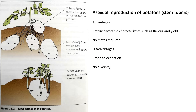The advantages of asexual reproduction in wild species is that you retain the favorable characteristics — the most obvious features will be shown. It doesn't require any mates, everything is done by a single parent, and it's fast. The disadvantages are that there is no diversity, and it is prone to extinction.